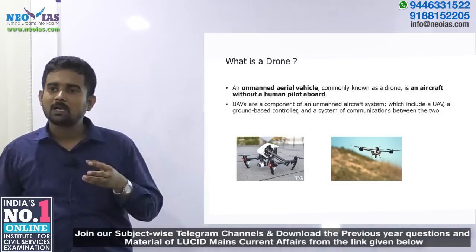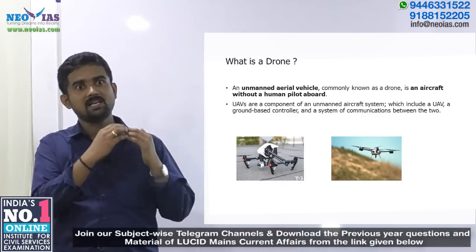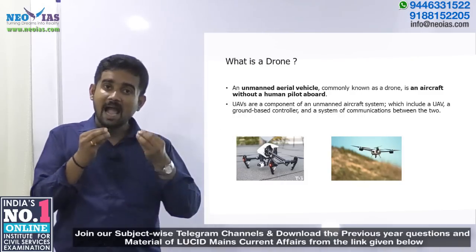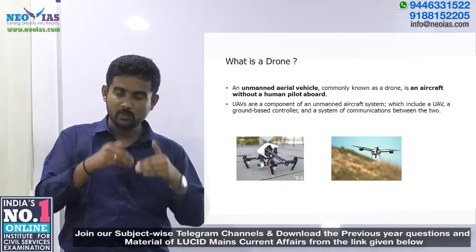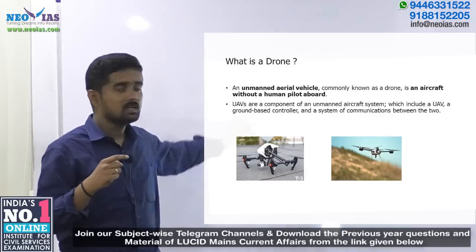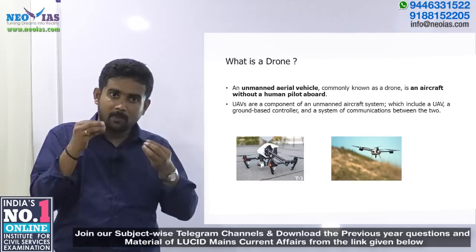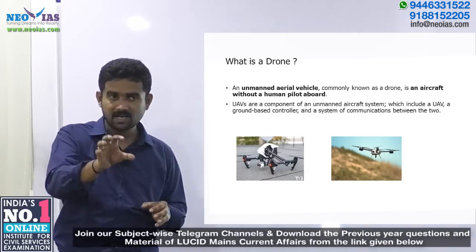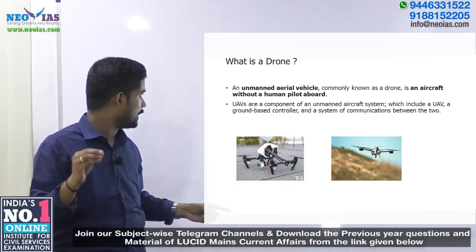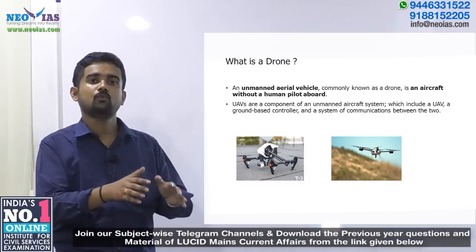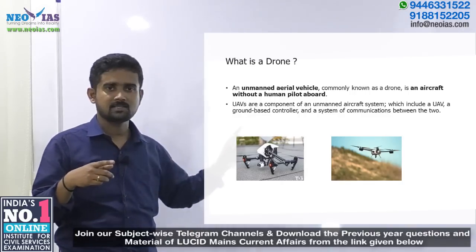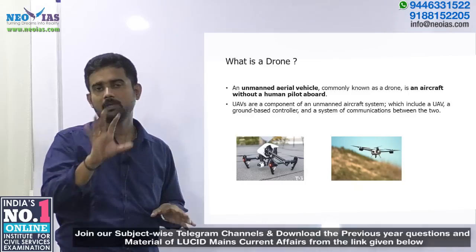Before that, we need to understand what is basically a drone. You would have seen it in shooting mechanisms at wedding ceremonies etc. It is basically an unmanned aerial vehicle — a vehicle wherein a human is not sitting inside and regulating its operation. A drone is part of an unmanned aircraft system, which includes the UAV (unmanned aerial vehicle) and a ground-based controller. The controller on the ground controls the drone's movement through a proper communication system between the controller and the UAV.